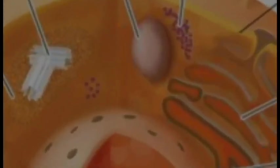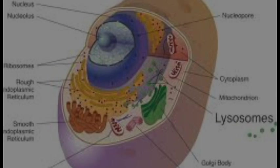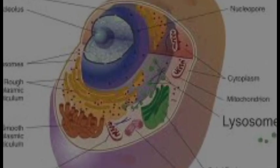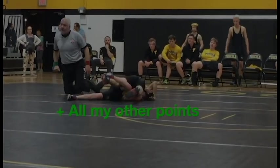Lysosomes, small-like sac structures, contain digestive enzymes which digest worn-out cell organelles in food. They are also known as a suicide sac. Well, I'm done. It's 2 o'clock in the morning. That's it.